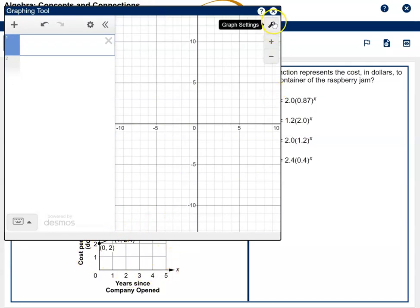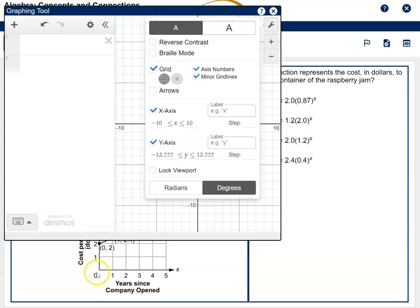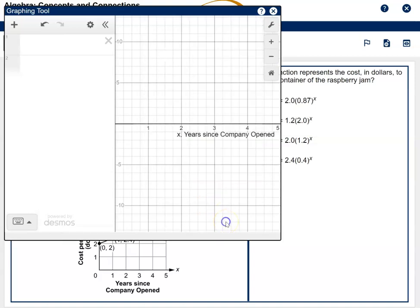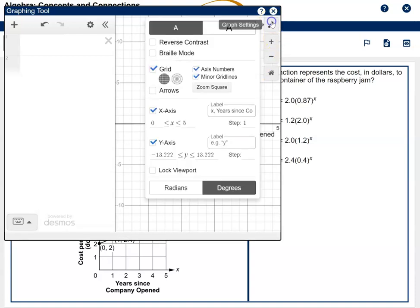I'm going to move this all the way up so that I can see the X's really well. Click on this wrench, and for your X values, you want to go from 0 to 5. So put 0 and 5, and you want to count by 1s. So where it says step, put 1. And for the X, I want you to put X, but also put a comma, and then type those words down there where it says years since company opened.